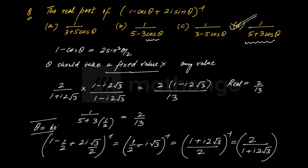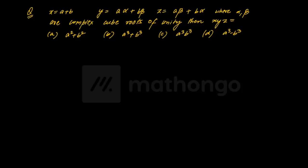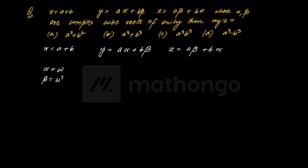Similarly, ek aur question dekhte hain. Yeh question kehta hai ki x is equal to a plus b, a beta plus b alpha. Ismein kaha gaya - alpha aur beta jo hain complex root of unity hain. Toh main keh leta hoon ki alpha omega hai aur b omega square hai. Ismein notice karo - answer options kiski pe dependent hain, a aur b ke upar.